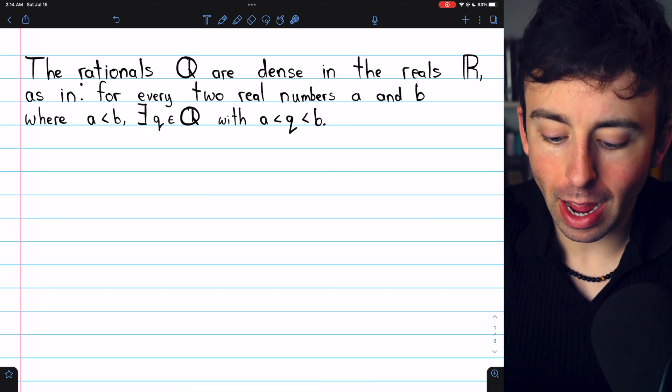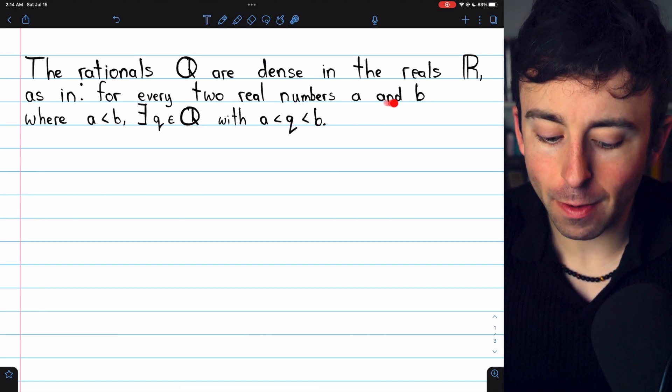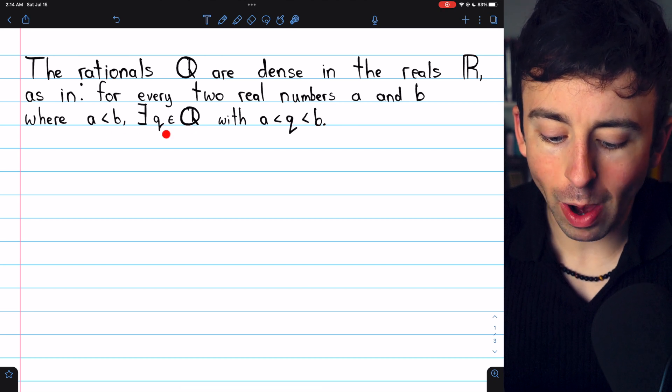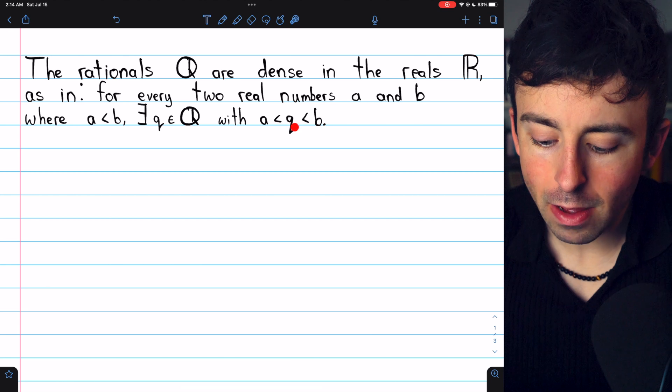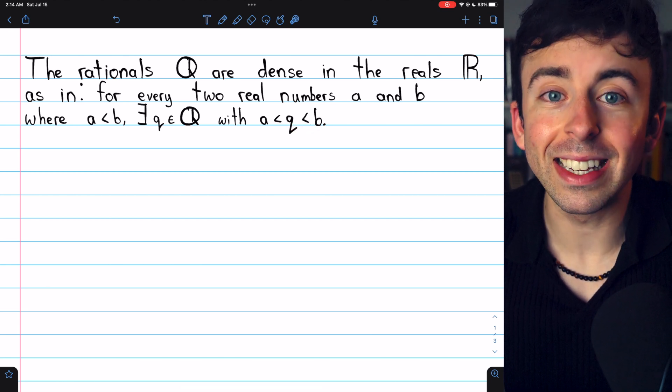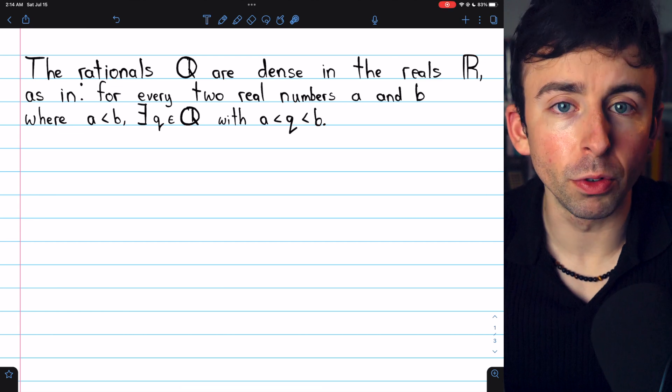More formally, for every two real numbers A and B, where A is less than B, there exists a rational number Q that's greater than A but less than B. That's what it means for the rationals to be dense in the reals, and that's what we're going to prove today.